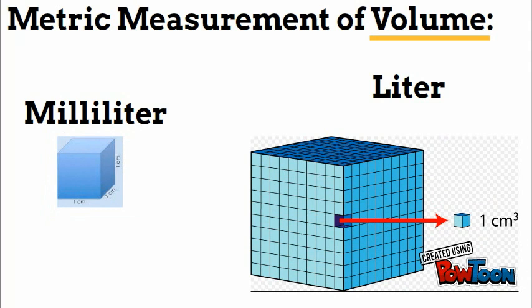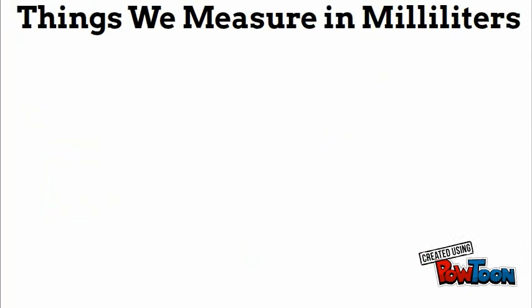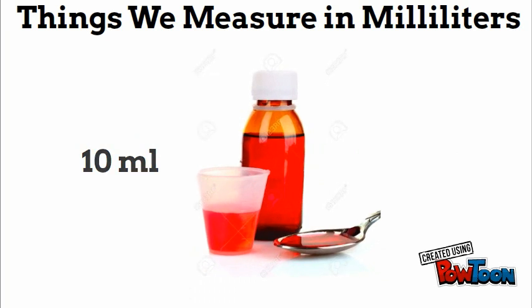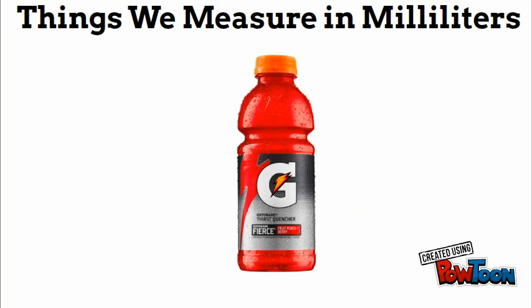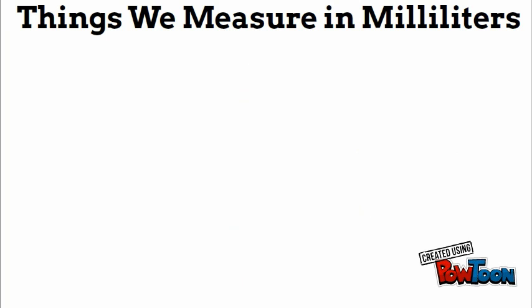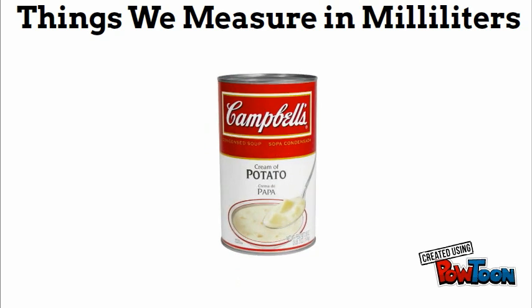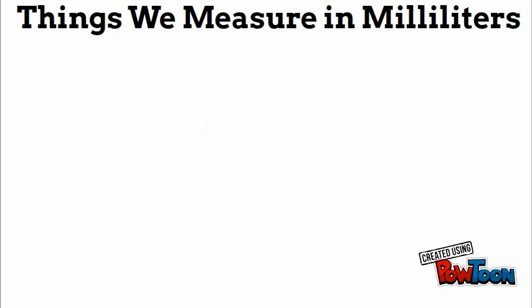We measure small amounts of liquid with milliliters. Like the cough syrup you take when you're sick—it's about 10 milliliters. A Gatorade bottle is usually about 250 milliliters. A small can of soup is about the same amount. So we measure small amounts of liquid in milliliters.